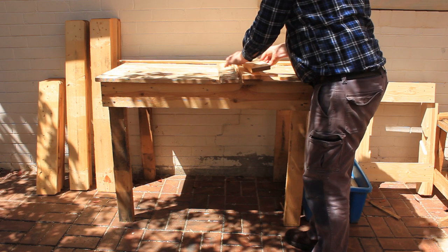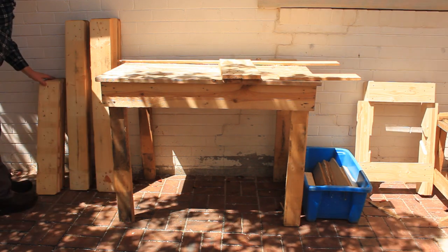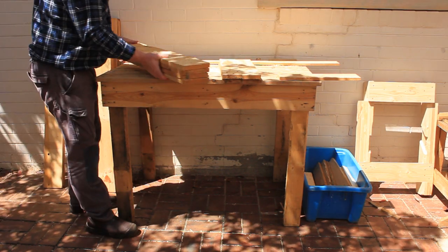We can get the 475 mill boards from the offcuts but we'll need to rip saw these wide boards to get the 600 mill ones.